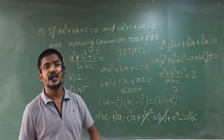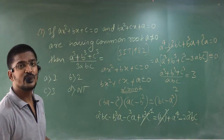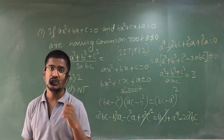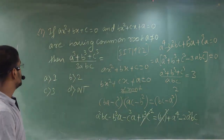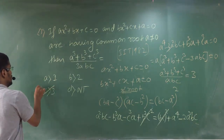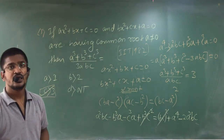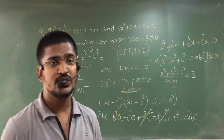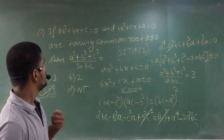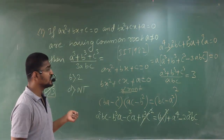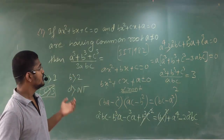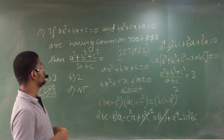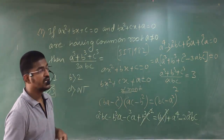Since a ≠ 0, we get a³ + b³ + c³ − 3abc = 0, which gives (a³ + b³ + c³)/(abc) = 3. Therefore the answer is 3. This shows how quickly you can solve the problem if you know the technique for common roots.